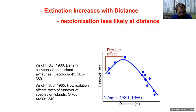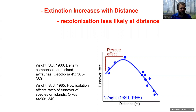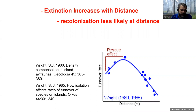One thing we see related to turnover rate — extinction of species with distance — is the rescue effect. When islands are really close to the mainland, being close overcomes the risk of extinction from being on a small island. When things die off on a small island, they're so close that they can recolonize really quickly from the mainland. It's basically a rescue effect where immigration to really close islands is so fast that it overcomes the extinction rate.